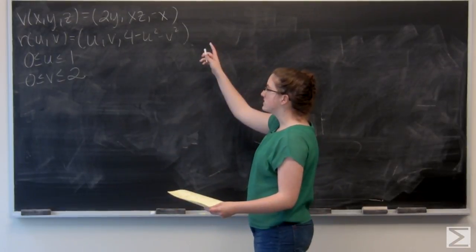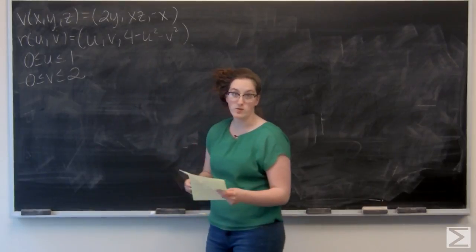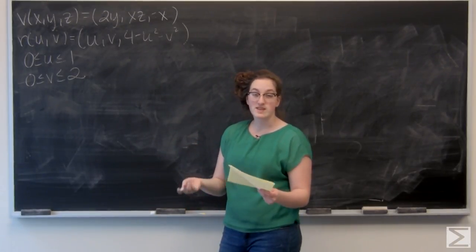Alright, in this problem I'm given a vector field v of x, y, and z, and a parametrized surface m given by r of u and v. And the multi-part question, the first part asked me to sketch that surface m.